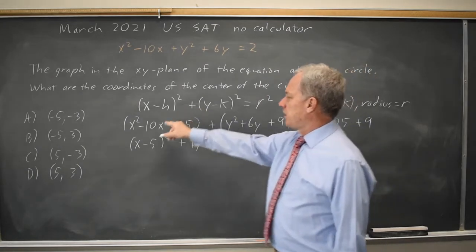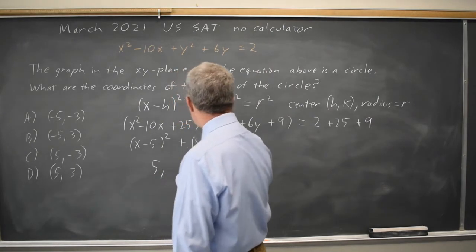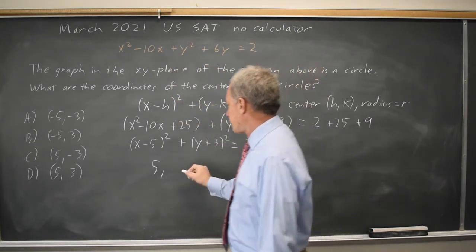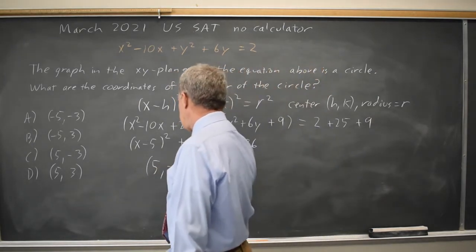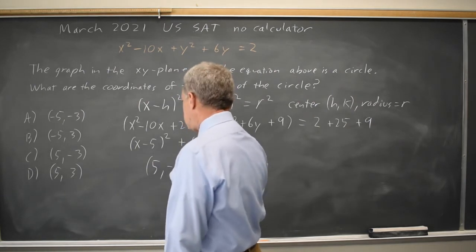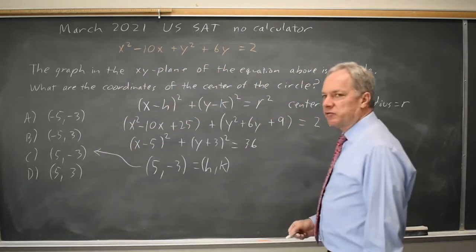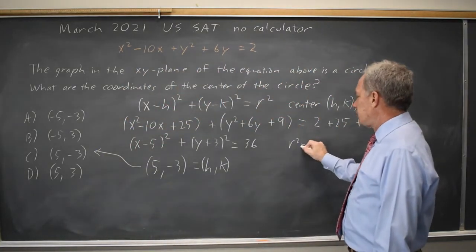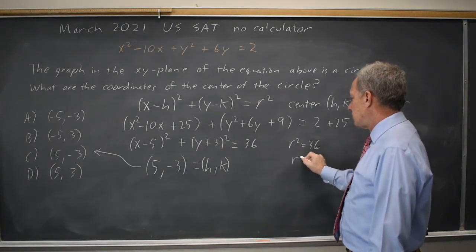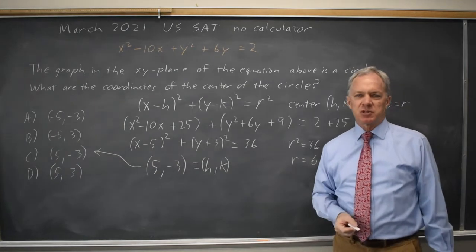So x - h is x - 5, y - k is y - (-3), (h, k), the coordinates of the center would be (5, -3) which is choice C. If I needed the radius, r² equals 36 so r is positive 6, remember the radius will be the positive square root.